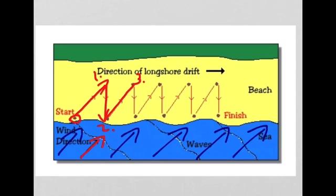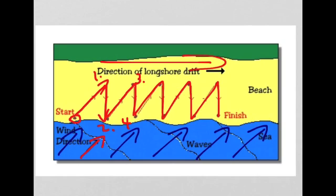angle to point three, back down the beach under the force of gravity to point four. This gets repeated, and therefore the particles get moved along the beach or along the coastline in a zigzag fashion. The direction of longshore drift in this case is that direction.